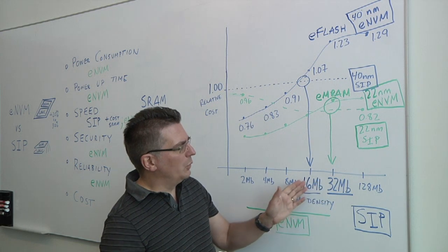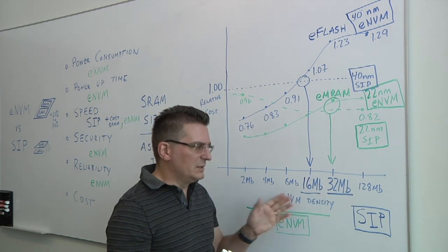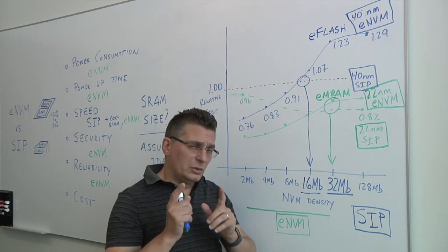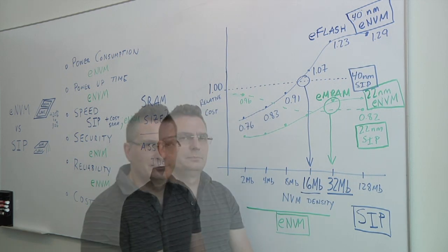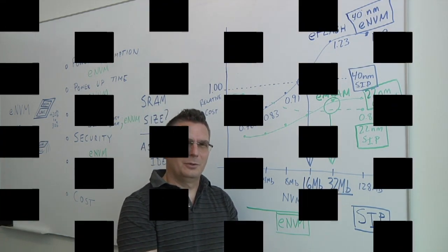That this is the crossover point that you want to target. And if you're going for the lower densities, lower than 32, you definitely want embedded NVM. Dave Eggleston, thanks for a great explanation. All right. Thank you very much, Ed.